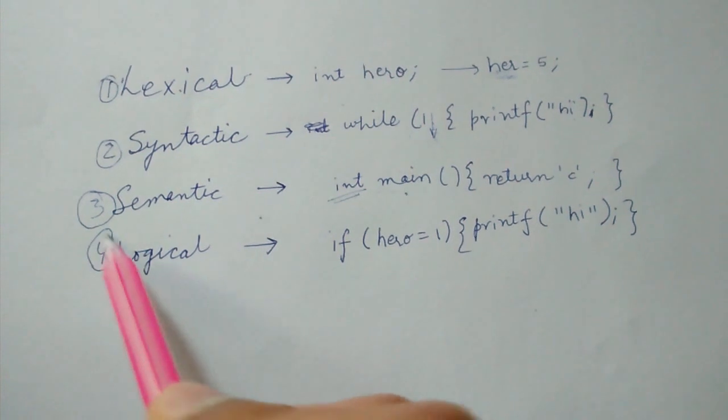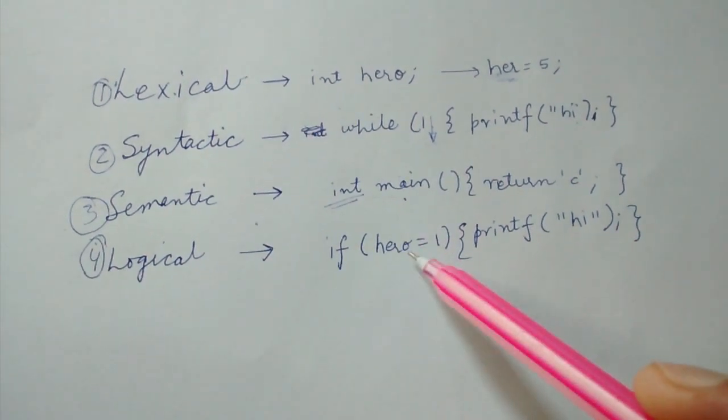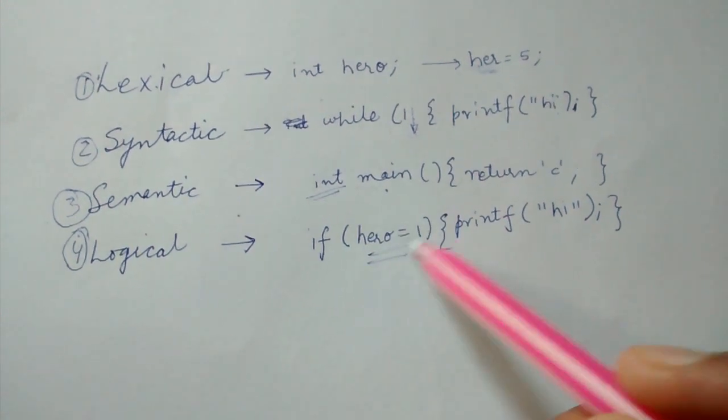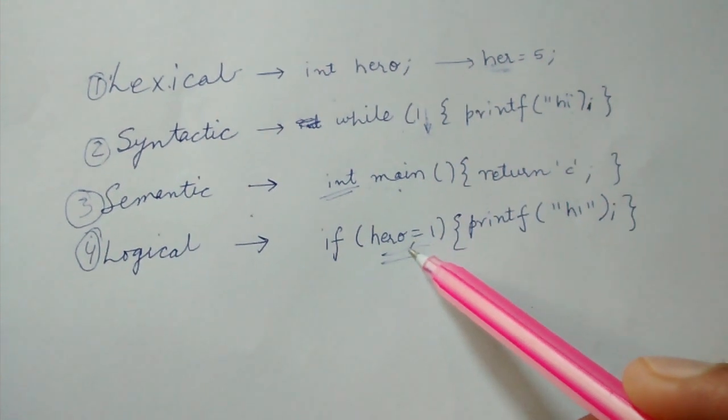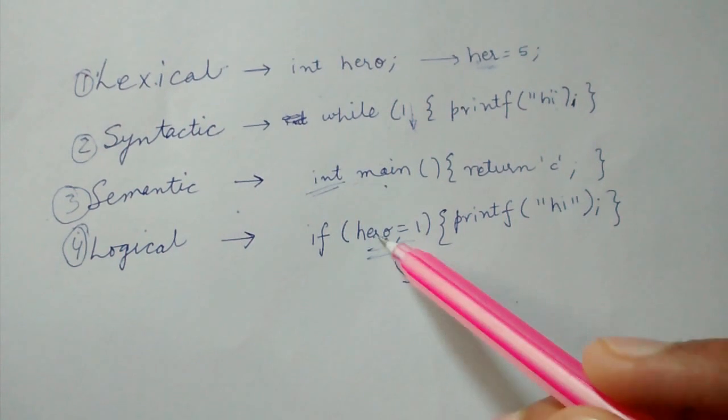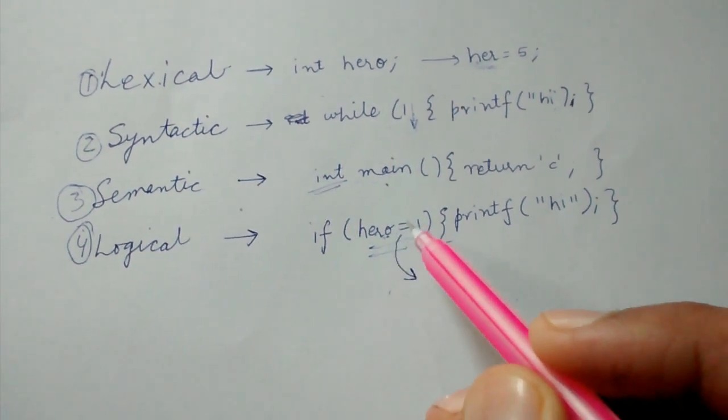Now we will talk about logical errors. This is a very common error with beginners. They write hero equals 1, and in C if we want to check the value of something like hero, we have to write double equals, and a single equal is considered assignment.